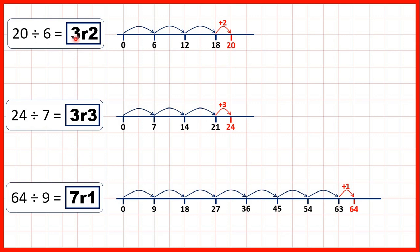Notice: 3 times 6 is 18, then from 18 we need 2 more to get to 20. 3 times 7 is 21, then from 21 we need 3 more to get to 24. And 7 times 9 is 63, then from 63 we need 1 more to get to 64.